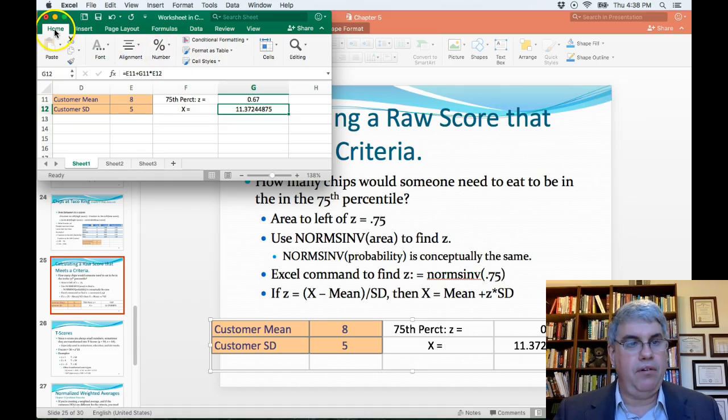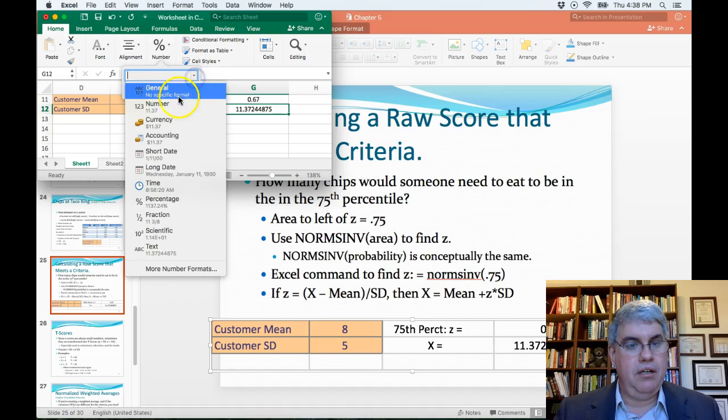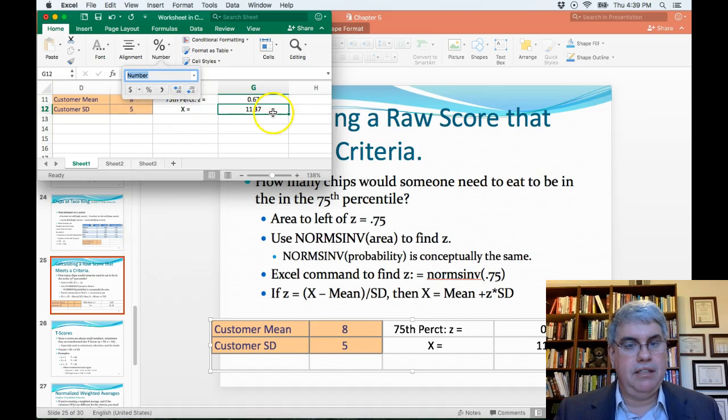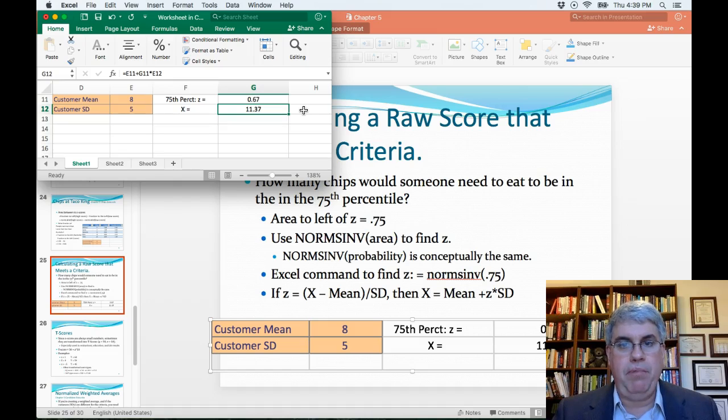Let's round that off. So home, number, number format. So 11.37 chips would put me in the 75th percentile of chip eaters. So someone that eats 11 chips at Taco King would be eating more chips than 75% of the people that come to the restaurant.